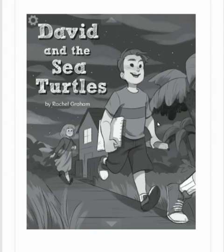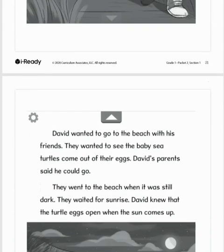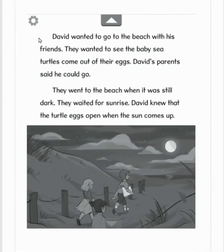David and the Sea Turtles by Rachel Graham. David wanted to go to the beach with his friends. They wanted to see the baby sea turtles come out of their eggs. David's parents said he could go. They went to the beach when it was still dark. They waited for sunrise. David knew that the turtle eggs open when the sun comes up.